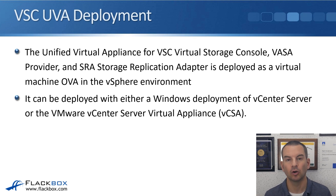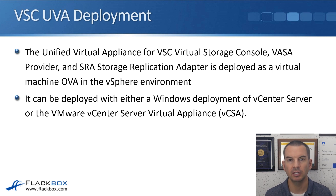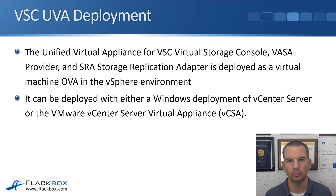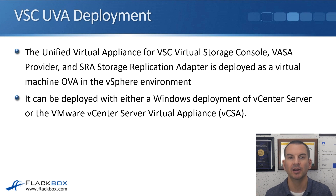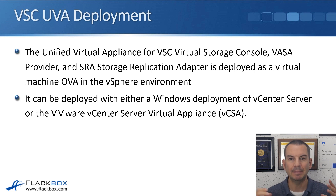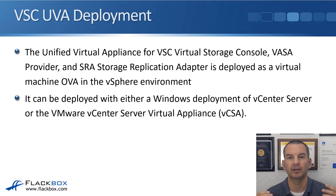OVA files are used very commonly in VMware. What they are is a virtual machine with prepackaged settings. Without an OVA file, you would normally install the operating system, then additional applications and software, and configure the settings. When you use an OVA file, it's a prepackaged virtual machine that includes the operating system, additional software, and desired settings, allowing you to get that virtual machine deployed a lot more quickly.